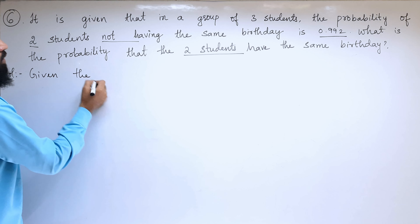We know that the sum of the probabilities is equal to 1. So, P of E plus P of E bar equals 1. To find out P of E bar, let us substitute the value of P of E: 0.992 plus P of E bar equals 1. So, P of E bar equals 1 minus 0.992.